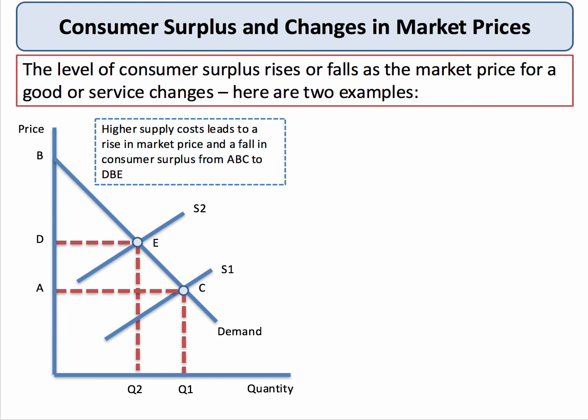Now, after the price rise, demand contracts — we move up the demand curve. Consumers are paying price D, so the consumer surplus is area DBE. That means there's been a fall in consumer surplus of area D, E, C, A. So an inward shift of supply, which increases prices, causes consumer surplus to fall.